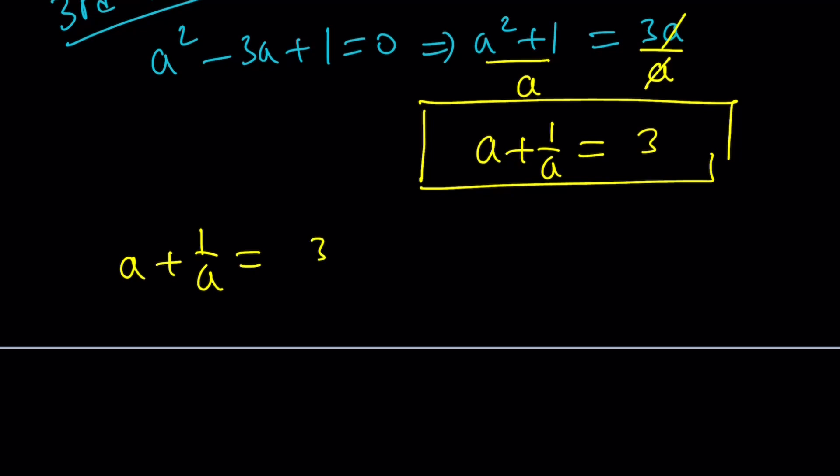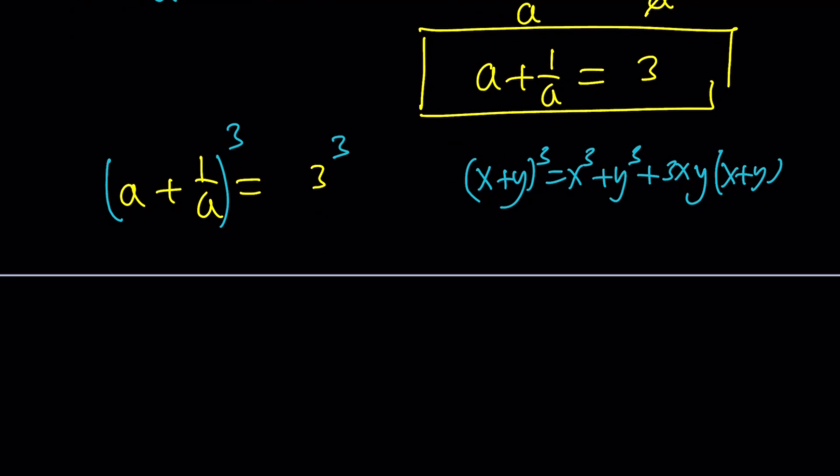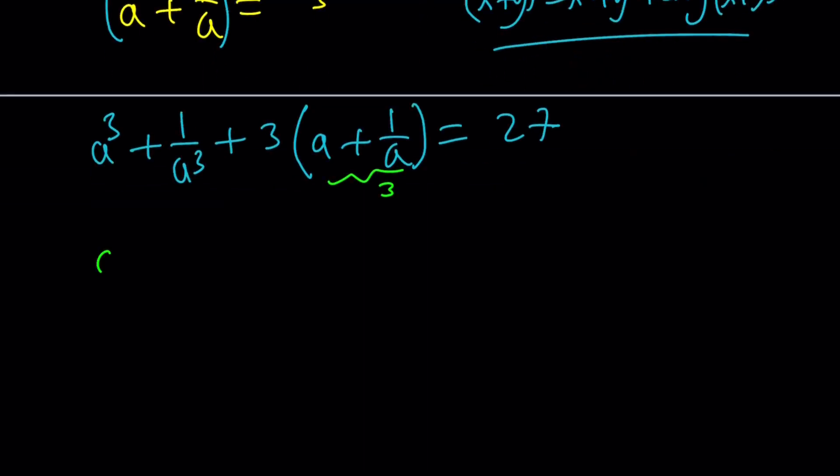Why is this cool? Because remember, our goal is to find a to the 6 plus 1 over a to the 6. And we can go from here. a plus 1 over a is 3. Let's go ahead and raise both sides to the third power. For the cube, I'm going to use a special formula for x plus y cubed. This gives us a cubed plus 1 over a cubed plus 3 times 1 times a plus 1 over a is equal to 27. Notice that this is equal to 3. 3 times 3 is 9. 27 minus 9 is 18. And that gives us a cubed plus 1 over a cubed as 18.